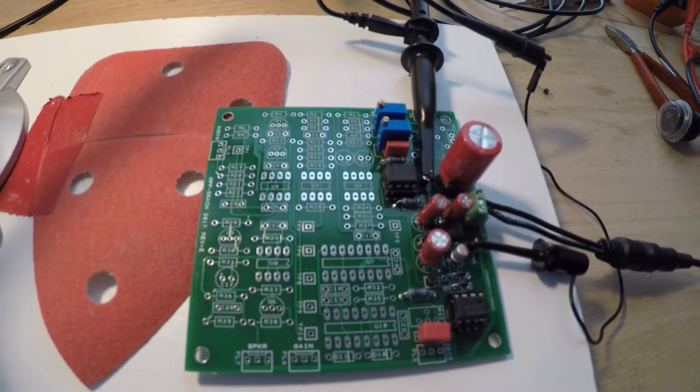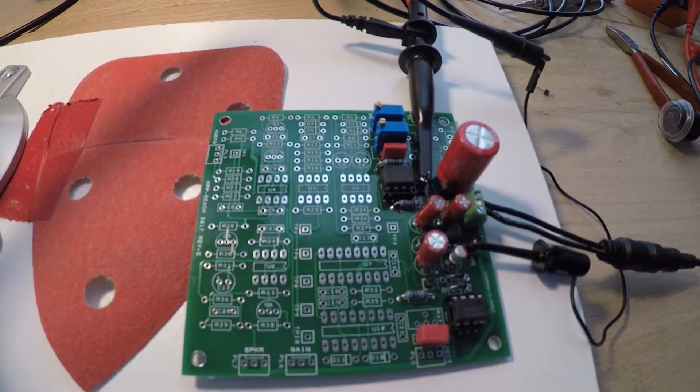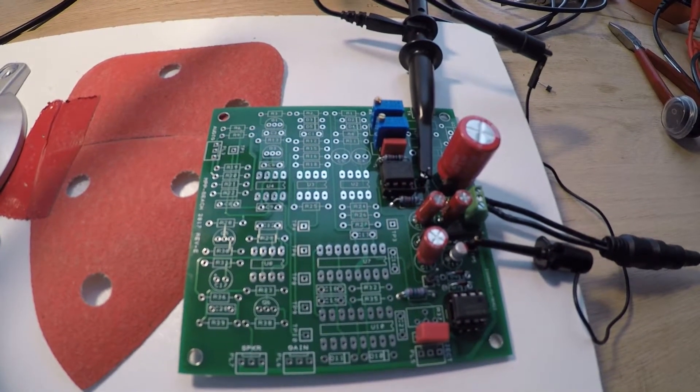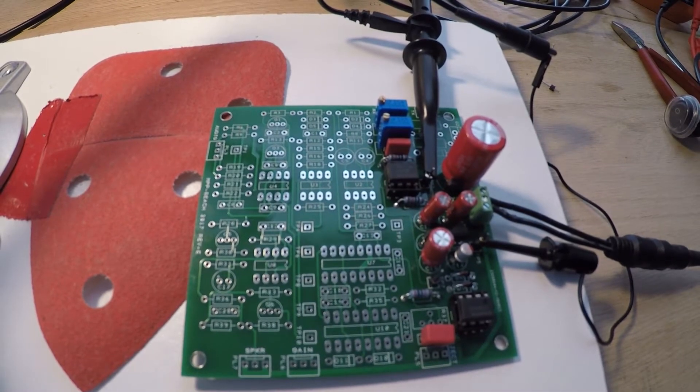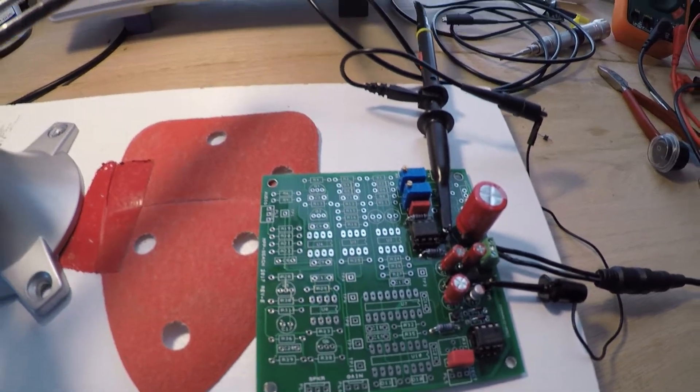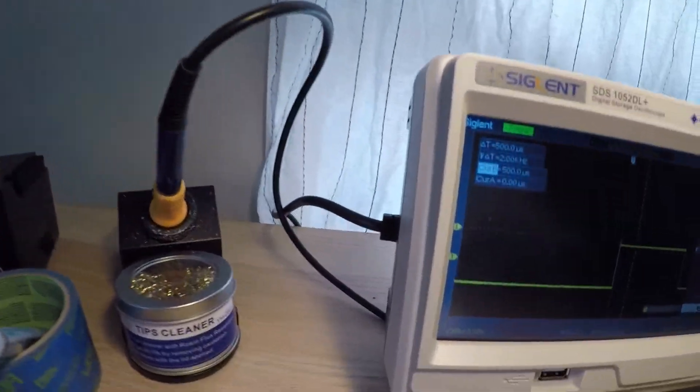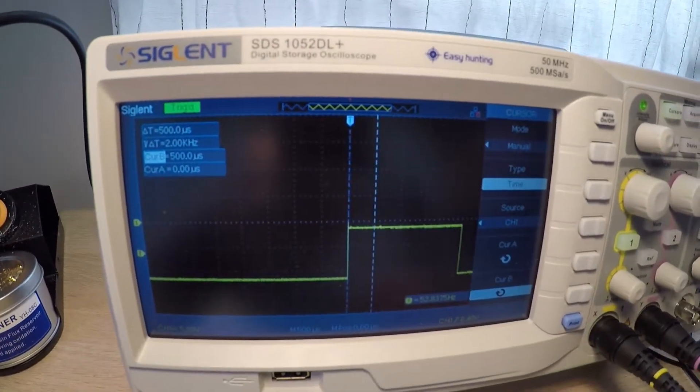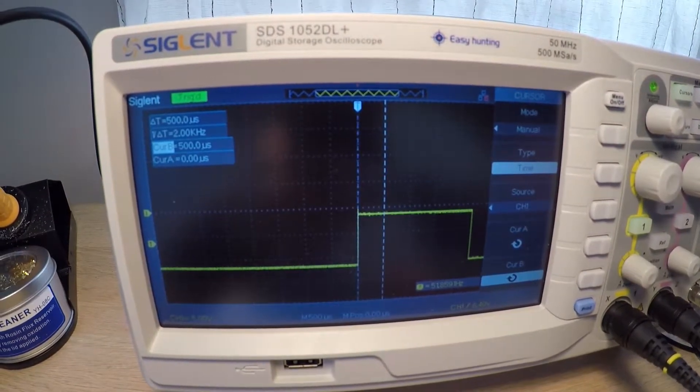I'm just going to adjust the transmit pulse to give me a pulse width of 100 microseconds. Bear with me here one second, trying to do this one-handed.